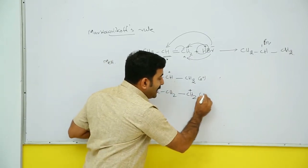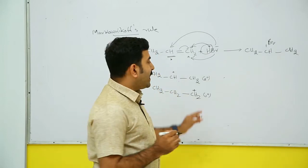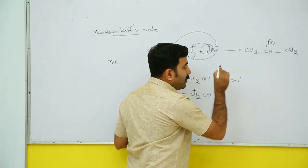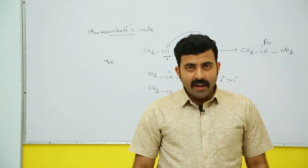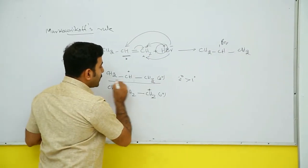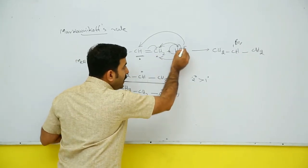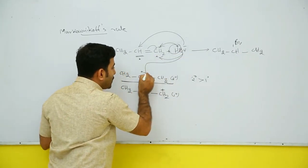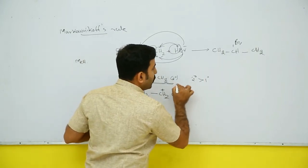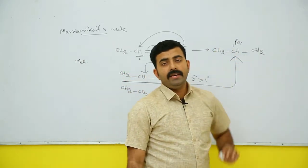The secondary carbocation is more stable than the primary carbocation. So in this case the secondary carbocation will lead to the major product. In the second step, Br- will naturally attach to the more stable carbocation, and the major product will be CH3-CHBr-CH3.